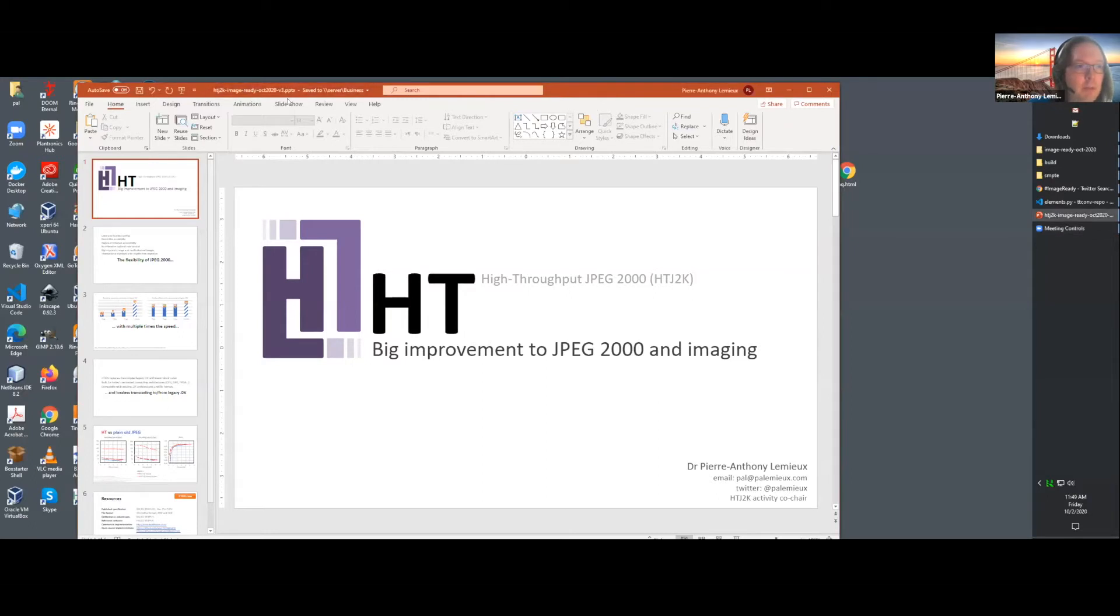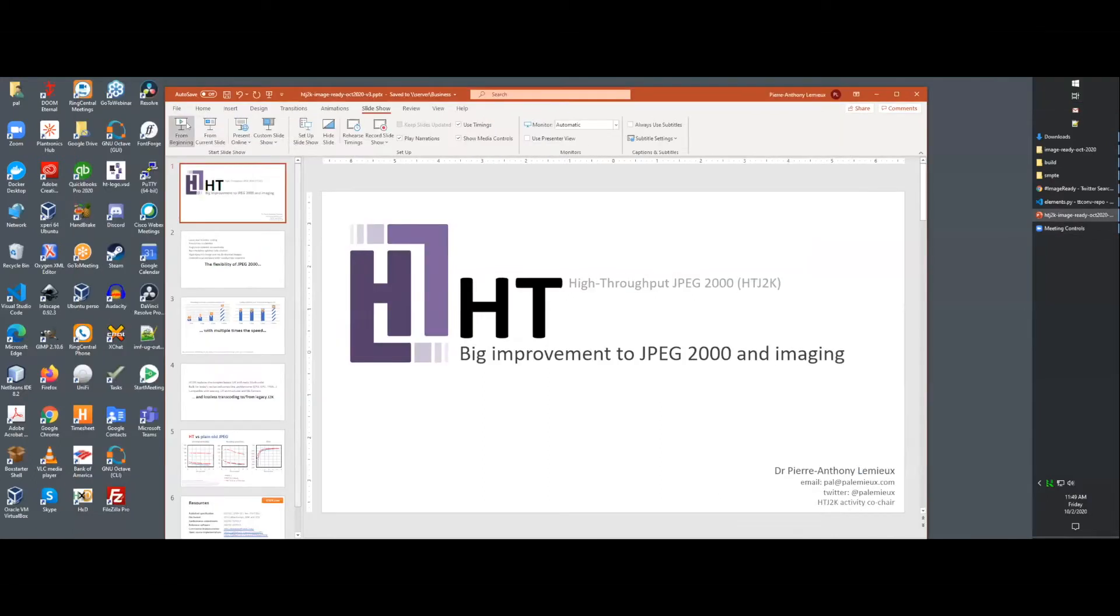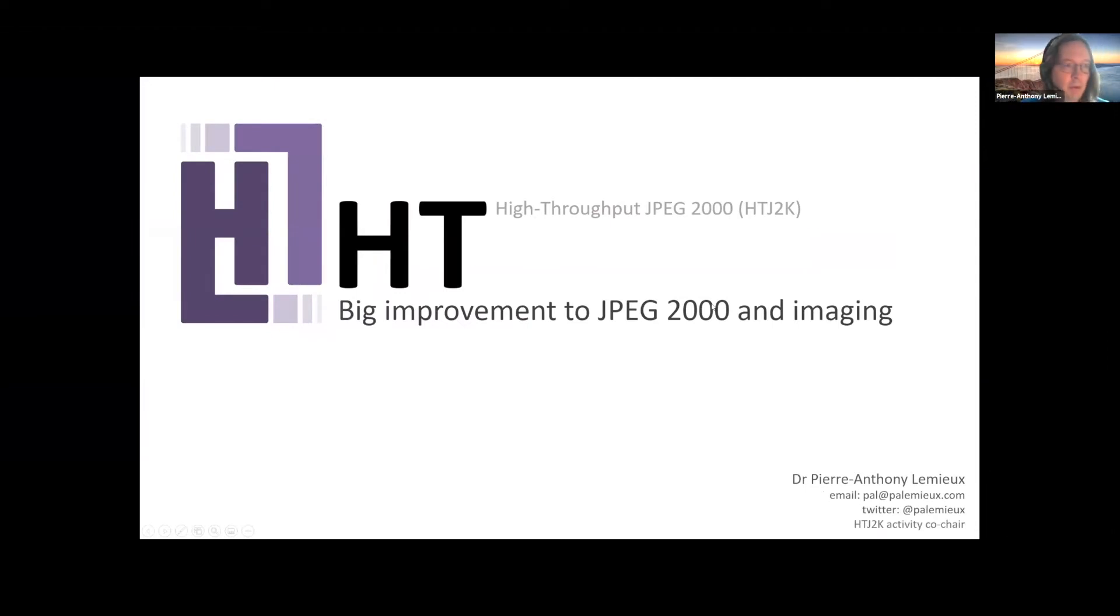So to talk about this and what is now being called the high-throughput JPEG-2000 or the HTJ2K or the HT is Dr. Pierre-Anthony Lemieux. Enjoy. Alright, let's take the stage. Let me just share my screen here. So thanks, Henry, for having me today here. I know it's a little short notice and I really welcome the opportunity. Today I just want to talk about the high-throughput JPEG-2000, which is abbreviated as HTJ2K, but because it's really a mouthful, we just call it HT.